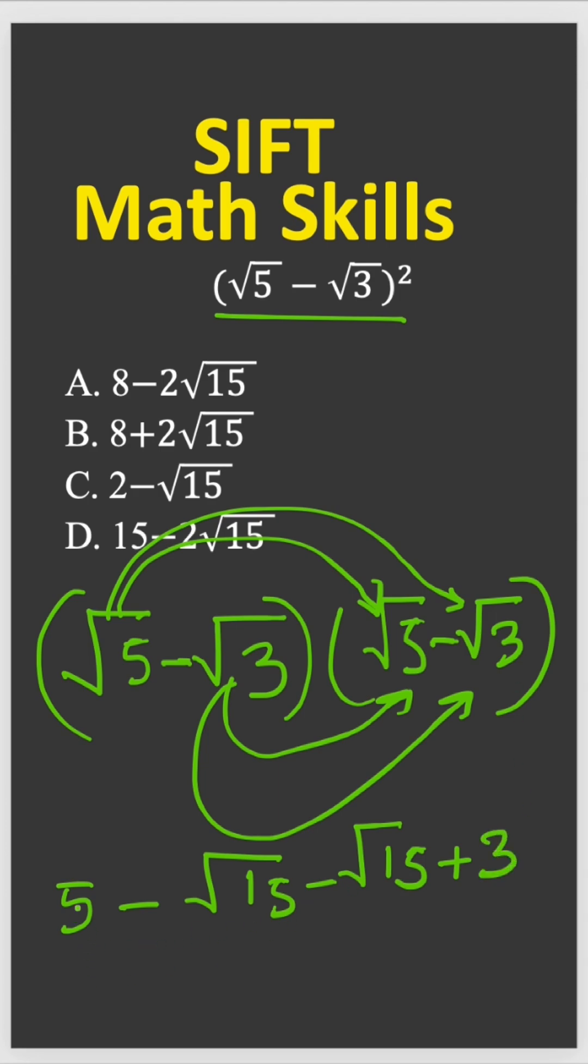Now, if you simplify that, that gives you 5 plus 3 is 8 and here minus 1, here is 1. So that gives you 2 square root over 15.